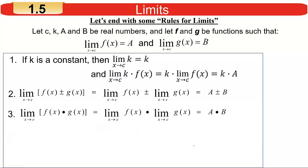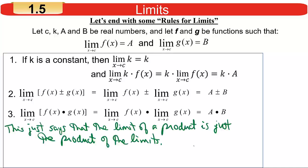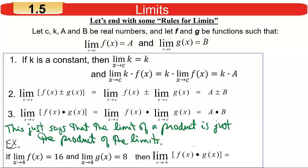Rule 3: the limit of a product is the product of the limits. If you take the limit of two functions multiplied together, you can take the limit of each one separately and multiply the answers. So if the limit of f(x) as x→c is 16 and the limit of g(x) as x→4 is 8, the limit of f times g is just 16 times 8. I probably could have left off listing these rules and you still would have gotten the right answer — it's very intuitive, and it actually works.